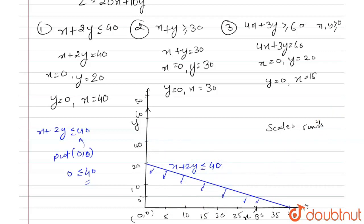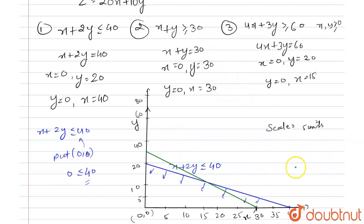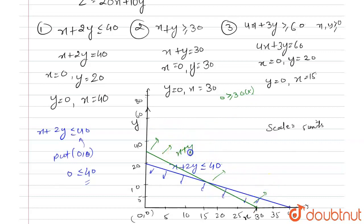Now we plot the region x plus y greater than or equal to 30. We draw the straight line x plus y equals 30: when x equals 0, y equals 30, and when y equals 0, x equals 30. When we put the origin into the inequality, we get 0 greater than or equal to 30, which is not possible. So this equation contains the region that is away from the origin.